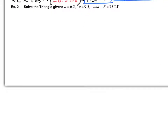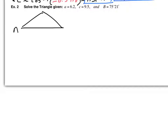I know that this is not Law of Sines — I don't have side B, which would be across from angle B. So this has got to be the included angle in between the two sides, making it SAS, which means Law of Cosines. I'll sketch my triangle. Side A is 6.2, side C is 9.5, and angle B is 75 degrees 21 minutes. The picture should tell you it's impossible to use Law of Sines.